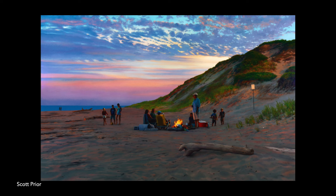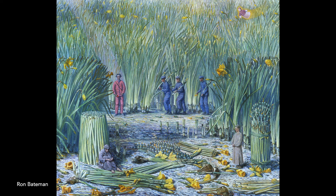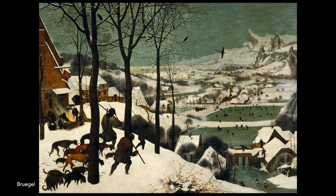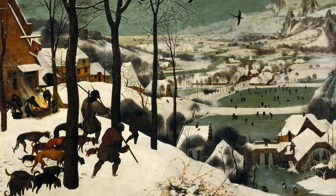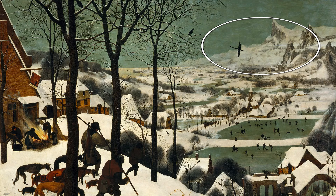Artists handle this in different ways. Here, the three layers are compressed, as if seen through a long lens. My all-time favorite evocation of space is in The Return of the Hunters by Bruegel — from the defecating dog in the extreme foreground to the distant mountain peaks, the richness of village life is spectacularly revealed. As objects move away from the picture plane, their size, color intensity, and value contrast all diminish. Bruegel's placement of the black bird over the far background demonstrates this effect.